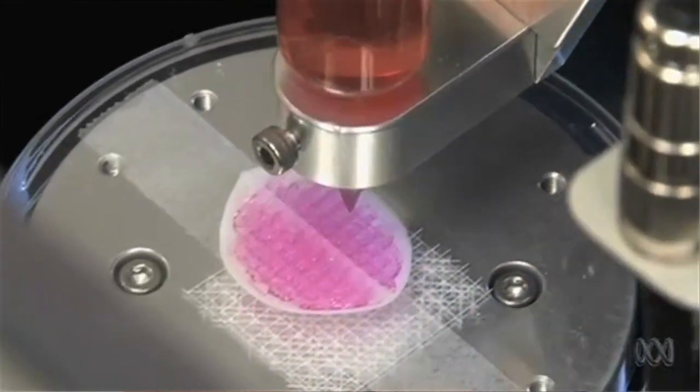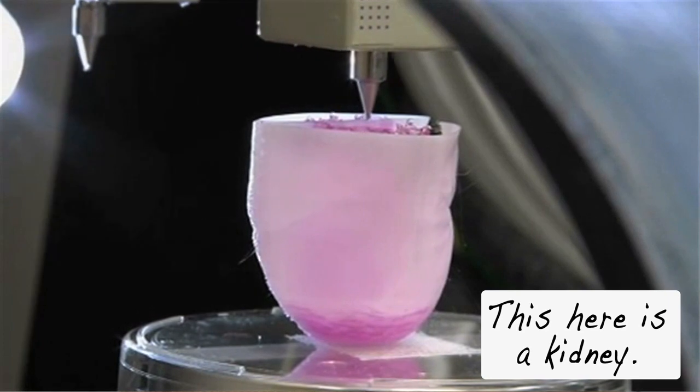And instead of seeding the scaffolding with cells by hand, scientists now use 3D bioprinters to print out bones, bladders, and even hearts. Instead of putting powders or resins in their printers, they're filling their cartridges with living cells.